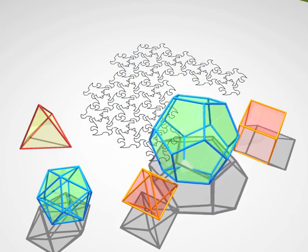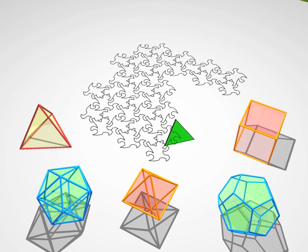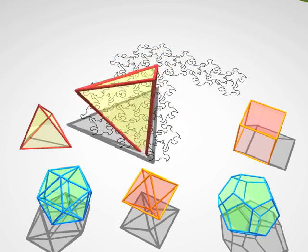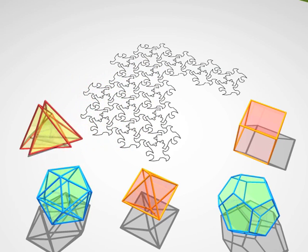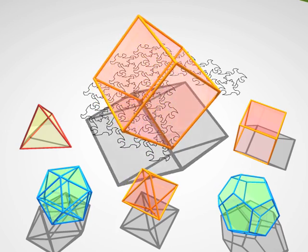Now we're going to show you some cross sections, and only cross sections, and you have to guess the polyhedron hiding behind them. That was a tetrahedron. That was a cube.